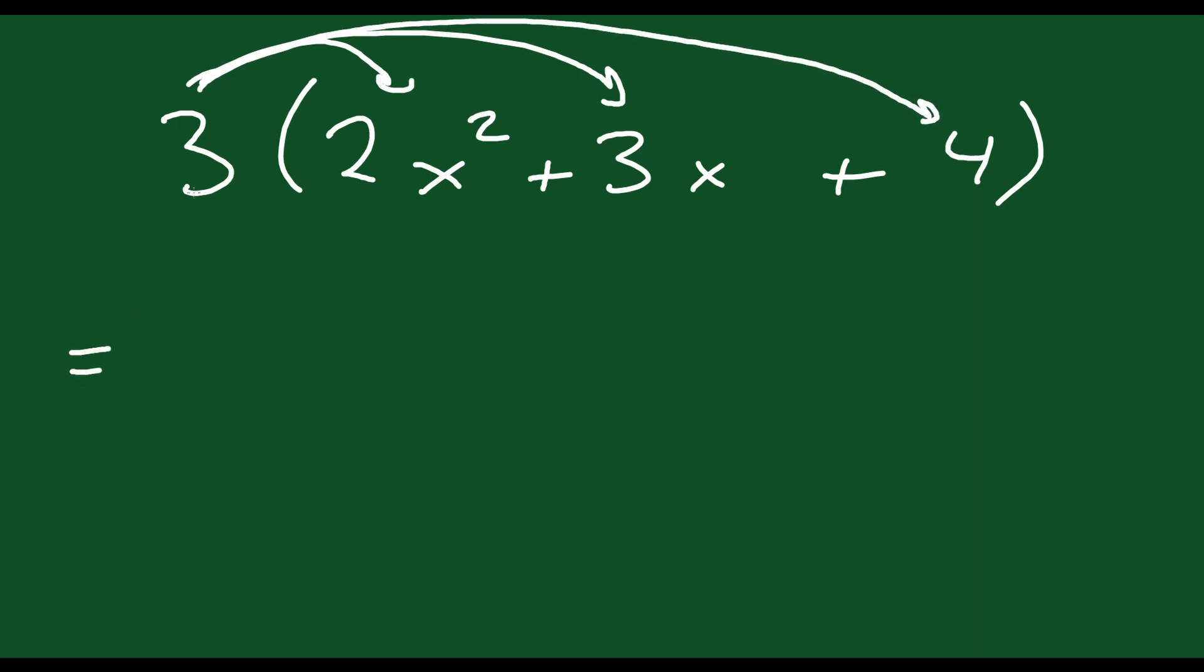So 3 times 2x² is 6x². 3 times 3x is 9x. 3 times 4 is 12. That's how you do that distribution.